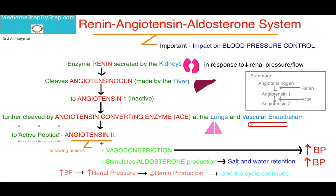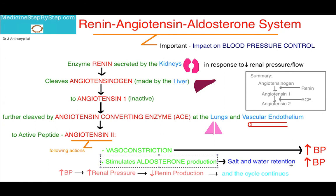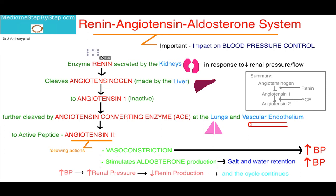So it's an active peptide and has the following actions. First of all, it causes vasoconstriction, which increases blood pressure, and it stimulates aldosterone production, causing salt and water retention at the kidneys, and therefore increasing blood pressure.